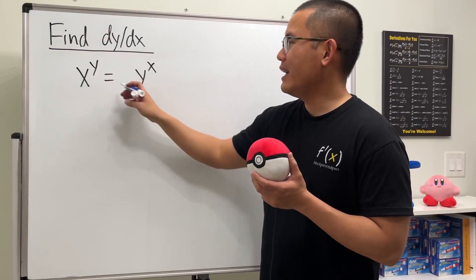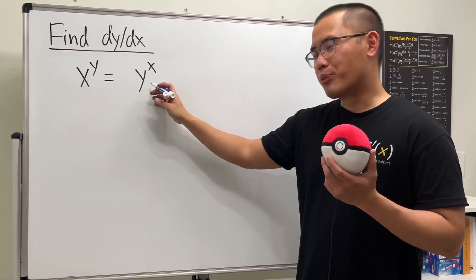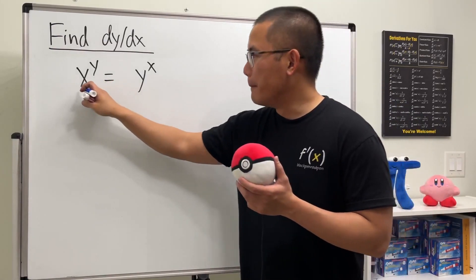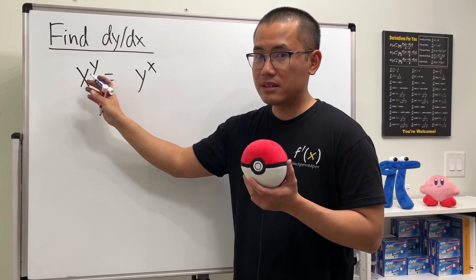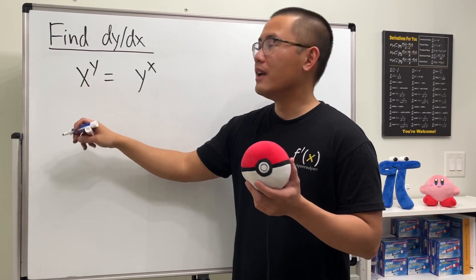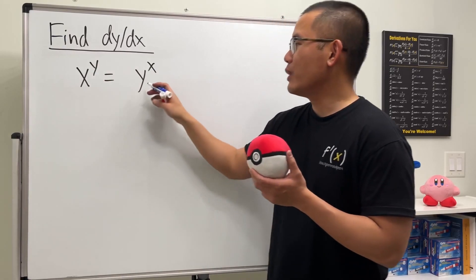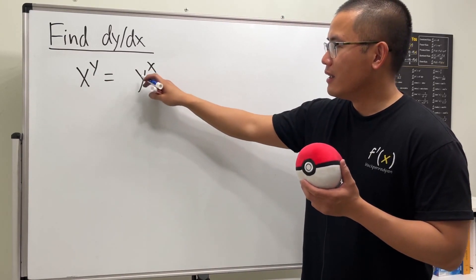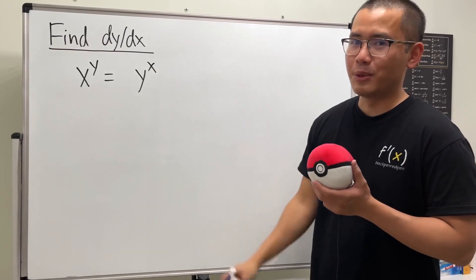Here is the y on both sides. The problem with this question is that the base on the left is x — it's a function — likewise the exponent. And here on the right, the base is also a function, likewise the exponent.